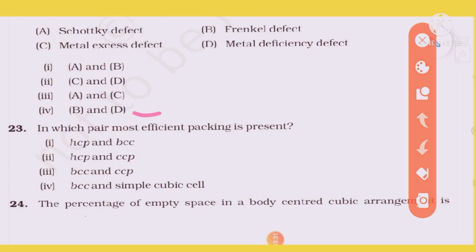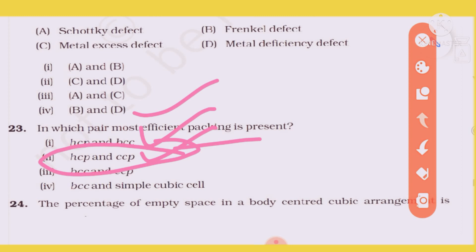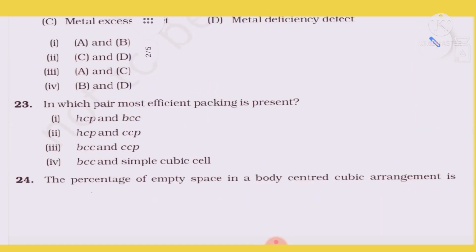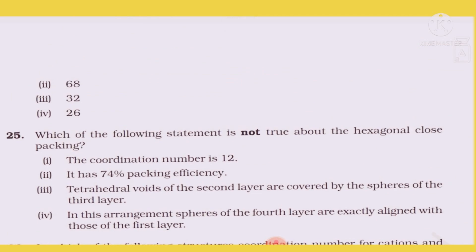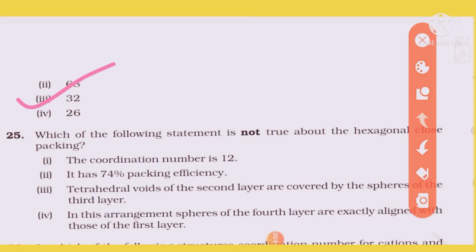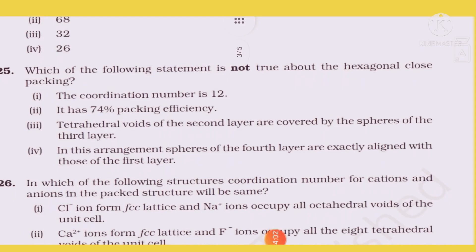In which structure is the most efficient packing present? HCP and CCP have the most efficient packing. For body-centered cubic (BCC), the percentage of empty space is approximately 32%, so around 30% empty space. Option C is the right answer.